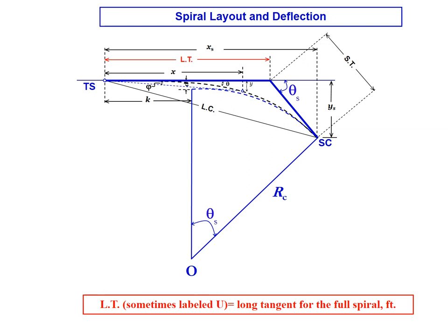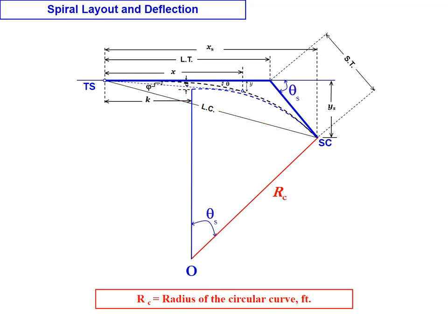LT, sometimes also labeled as U, is the long tangent for the spiral curve, spiral transition. ST, which also sometimes can be labeled as V, is the short tangent for the full spiral. LC is the long chord for the full spiral, so the line connecting TS and SC is the long chord. And R sub C is the radius of the circular curve.